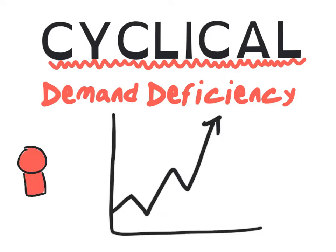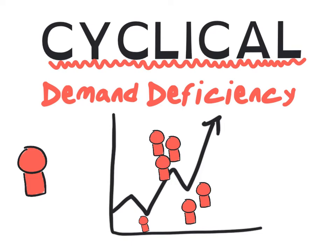Next up, cyclical unemployment, also known as demand deficiency, which leads to temporary unemployment due to insufficient demand in the economy. Based on the upswings and downswings of the business cycle, cyclical unemployment occurs during recession or slump periods. Cyclical unemployment therefore worsens during downswings, but improves during upswings in the economy.